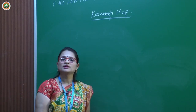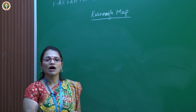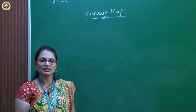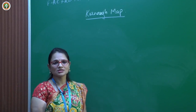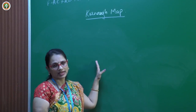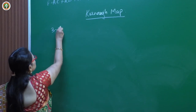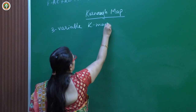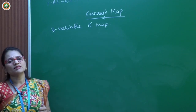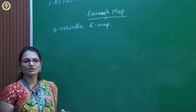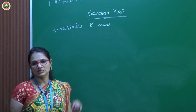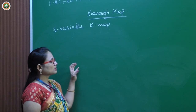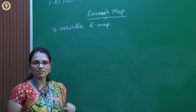For a 2-variable K-map, when we have two variables, there are four squares. Now let us look at the 3-variable K-map. In a 3-variable K-map, the truth table contains eight rows — from 0 to 7 — giving minterms M0 to M7. It is not as simple as the 2-variable K-map. Let us see the difference.